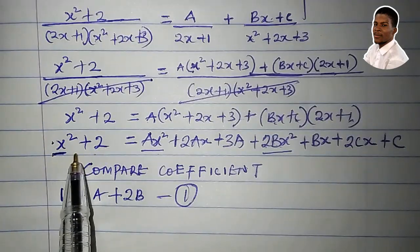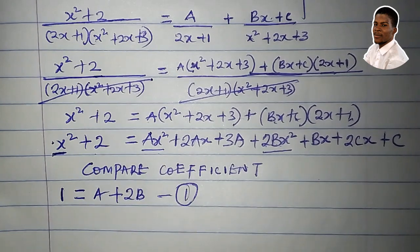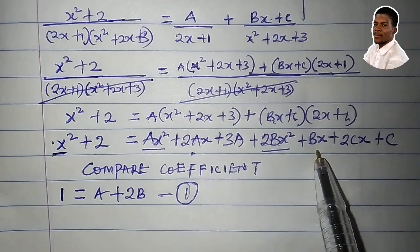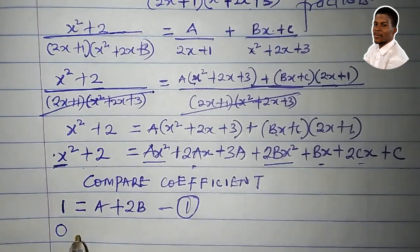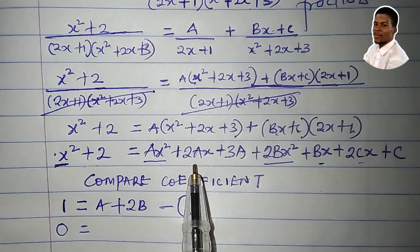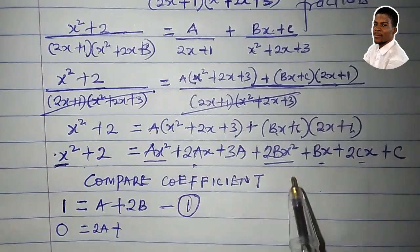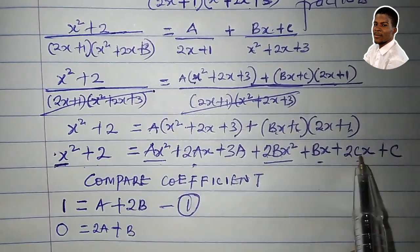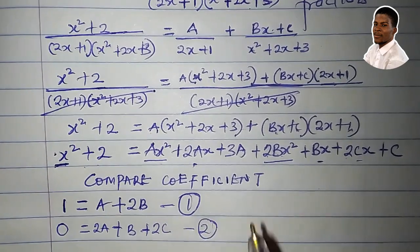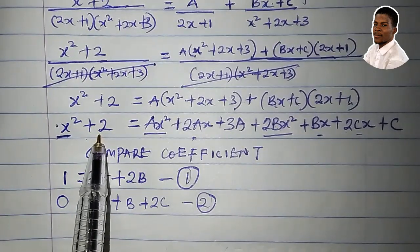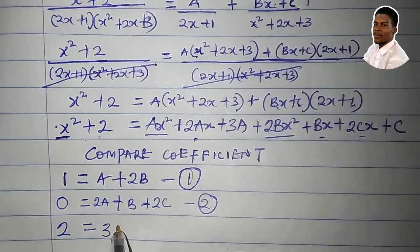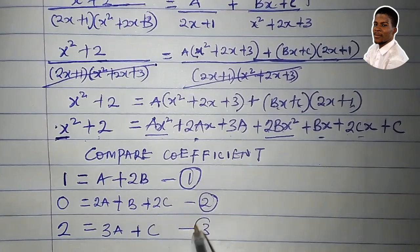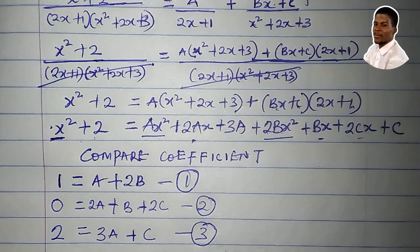On the left-hand side there is no term in x, but on the right-hand side we have 2ax, bx, and 2cx. Since there is no x term on the left, the coefficient equals 0: so 0 = 2a + b + 2c. This is equation 2. For the constant terms: on the left we have 2, and on the right we have 3a and c. So 2 = 3a + c. This is equation 3.